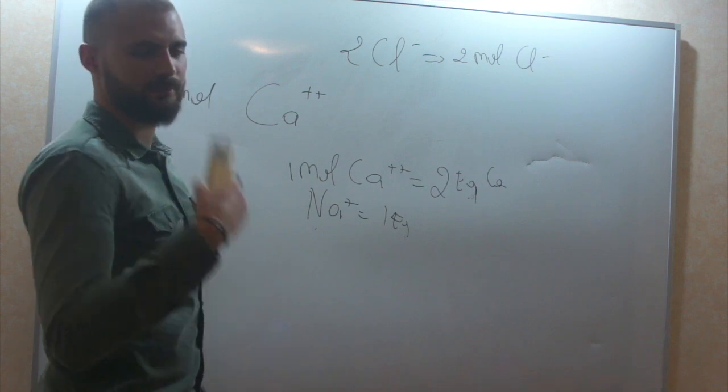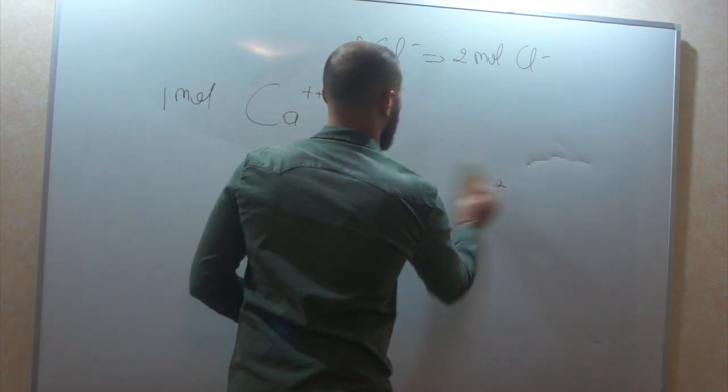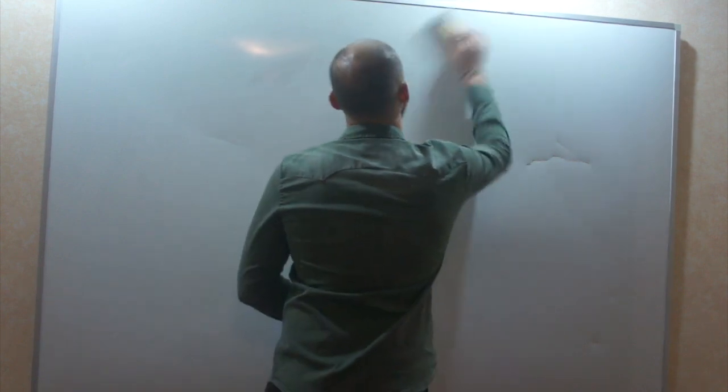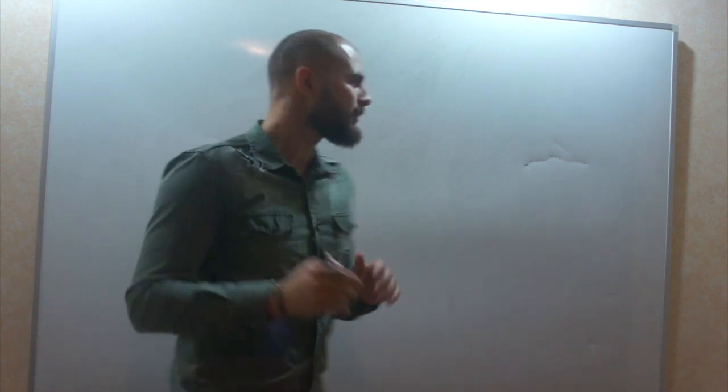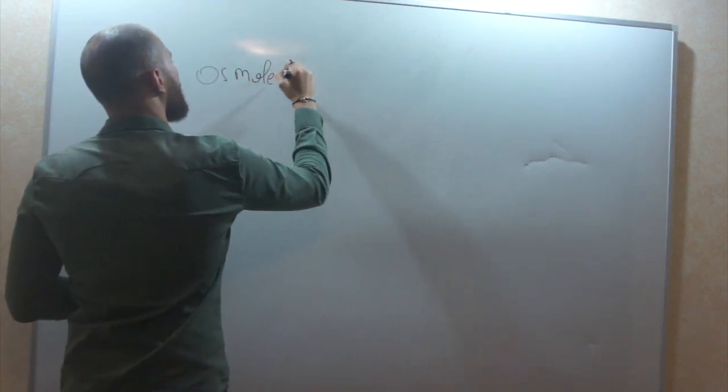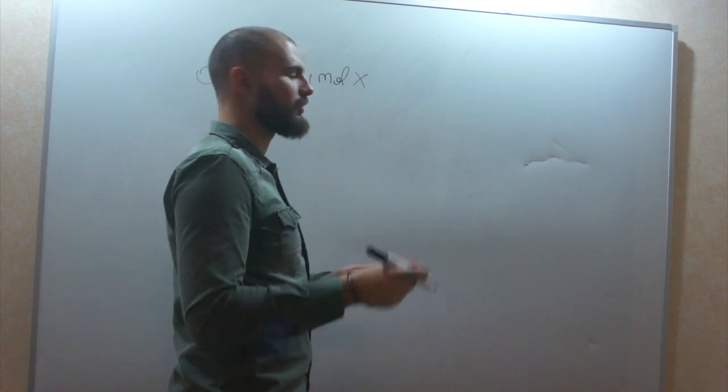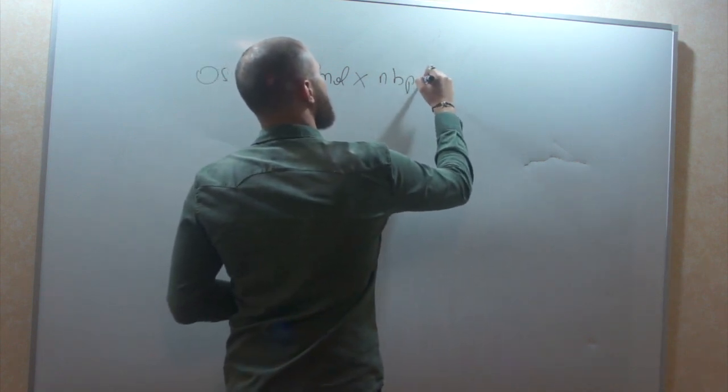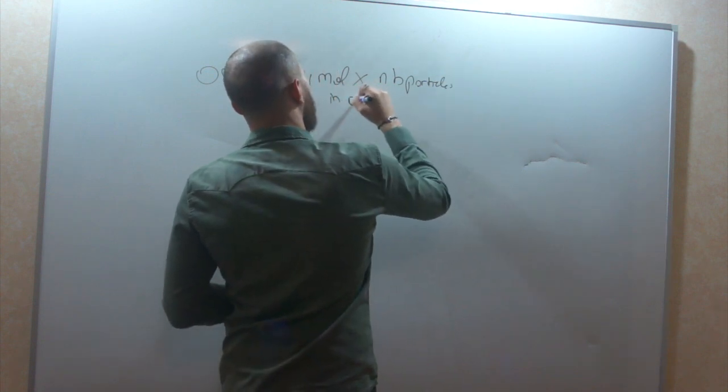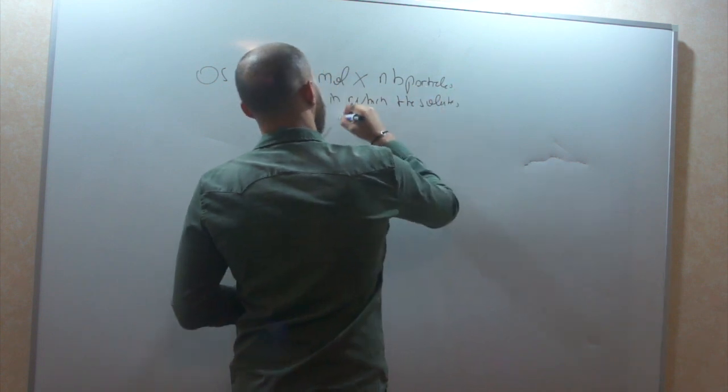So, that's how you go from equivalents to moles. And now, the last one. Osmol. Osmol is the simplest one. So, what's an osmol? It's 1 mole multiplied by the number of particles in which a solute dissociates in a solution. The number of particles in which the solute dissociates in a solution.